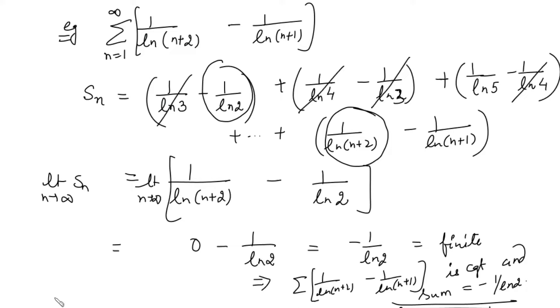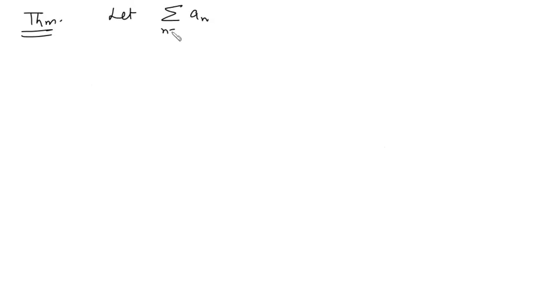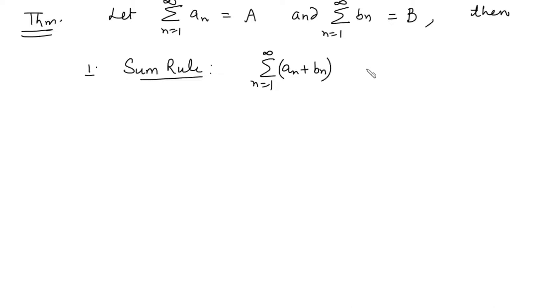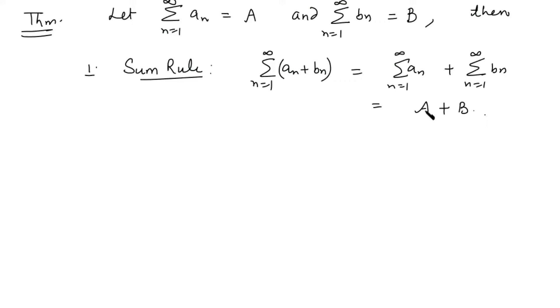Now let's look at more results related to the convergence of series. The theorem states: suppose two series ∑an and ∑bn are both convergent, with sums A and B respectively. Then the sum rule says the series ∑(an + bn) is also convergent, and it converges to A + B.